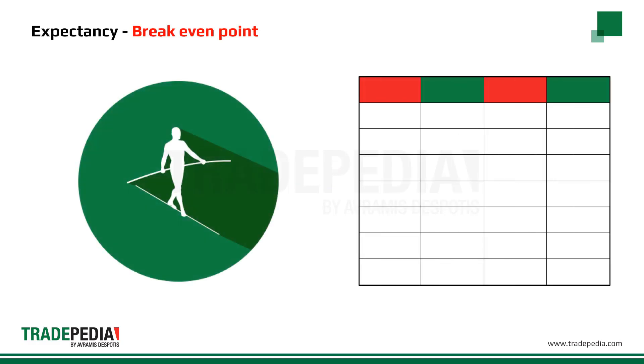Any method that has a positive expectancy will make money in the long run, while any method that has a negative expectancy will lose money. When the expectancy is zero, the trader will be at breakeven.